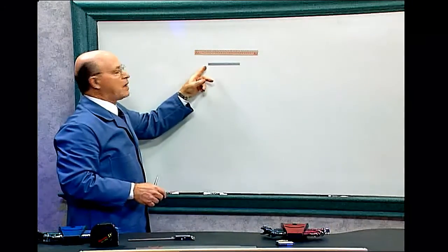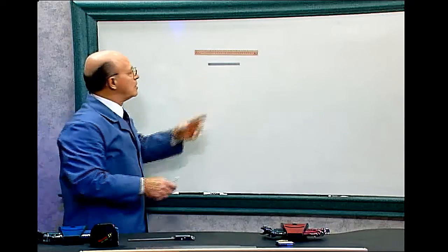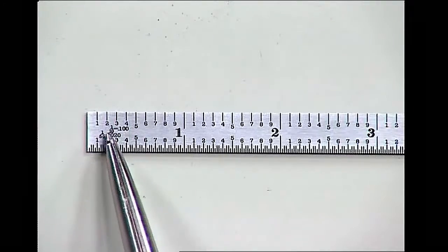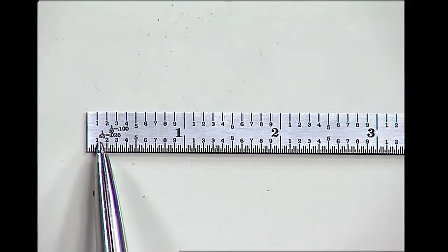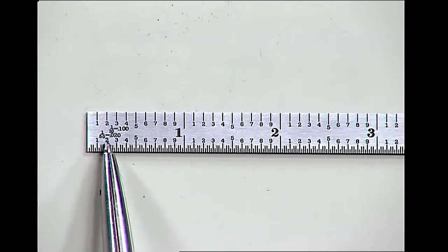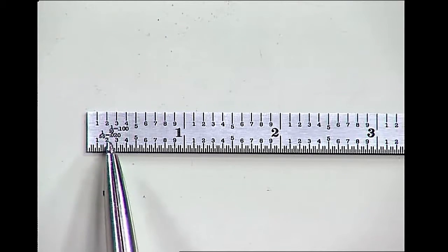We also have a ruler that's divided into one fiftieth. On the top, one tenth equals one hundred thousandths, and this ruler, notice over here, is one fiftieth, and that equals twenty thousandths.